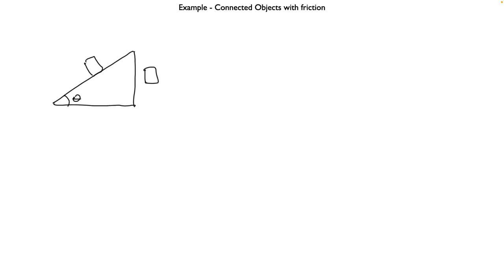If the object is sliding up the slope, just because it's sliding up does not necessarily mean it has acceleration — it could be sliding up at constant speed, in which case the acceleration is zero. But if it's sliding up the slope, what do we know about friction? It's kinetic, because it's sliding, and it's pointing down the slope. Kinetic friction always acts against the direction of motion. The forces on mass number one are exactly the same as in chapter five, except I've added the kinetic friction pointing down the slope.